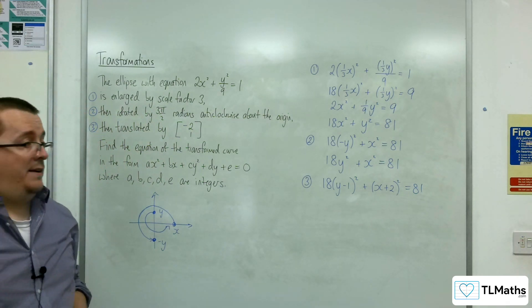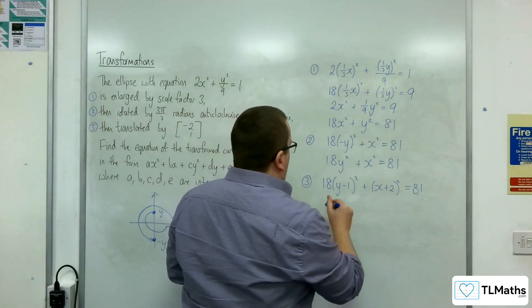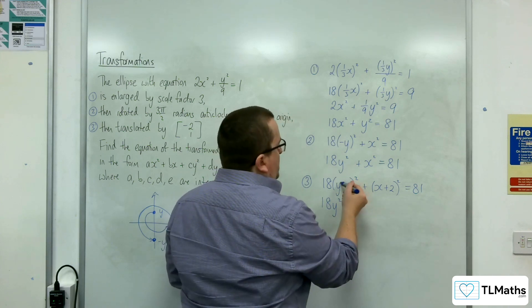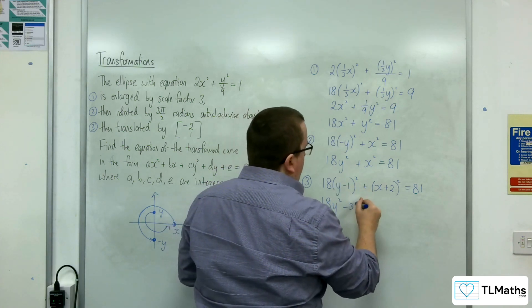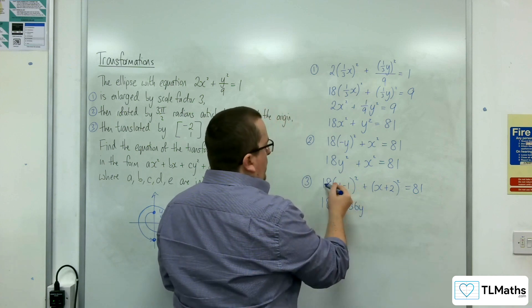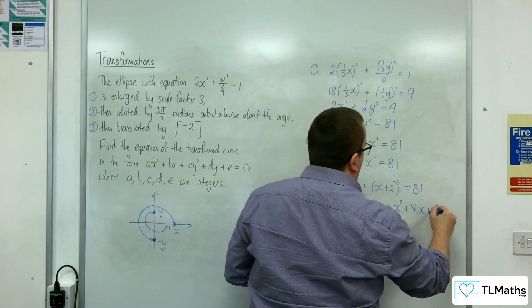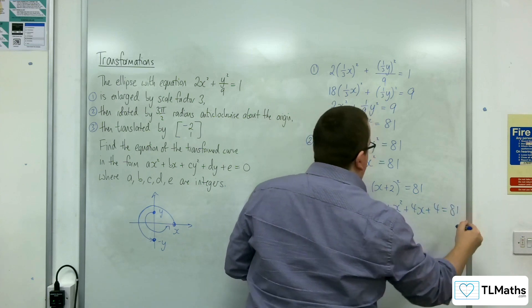So now I want to expand this out. So we're going to have 18y squared. We'd get minus 2y in there, so minus 36y. And then a plus 1 times 18, so plus 18. Plus x squared plus 4x plus 4 equals 81.